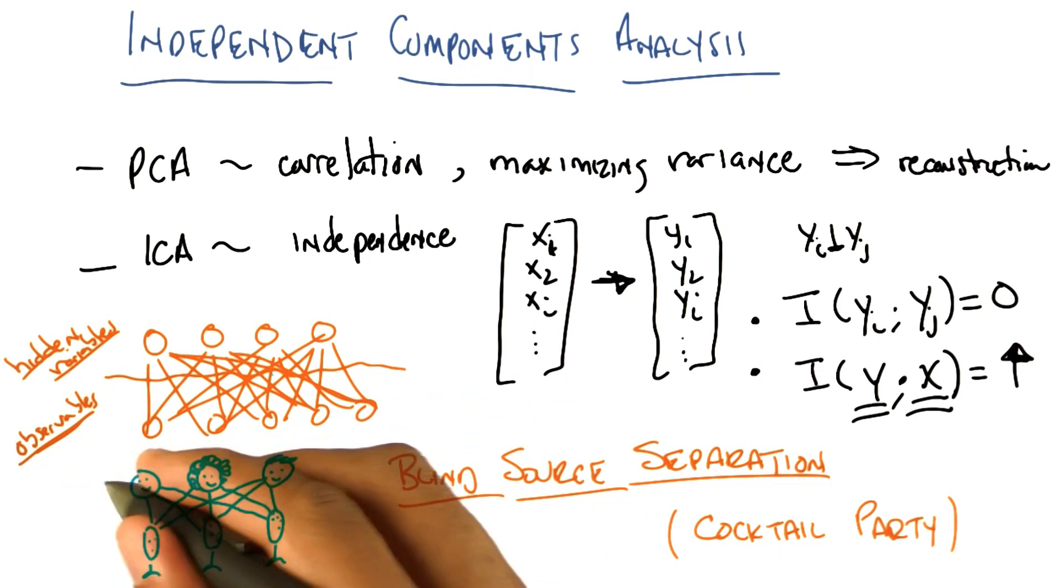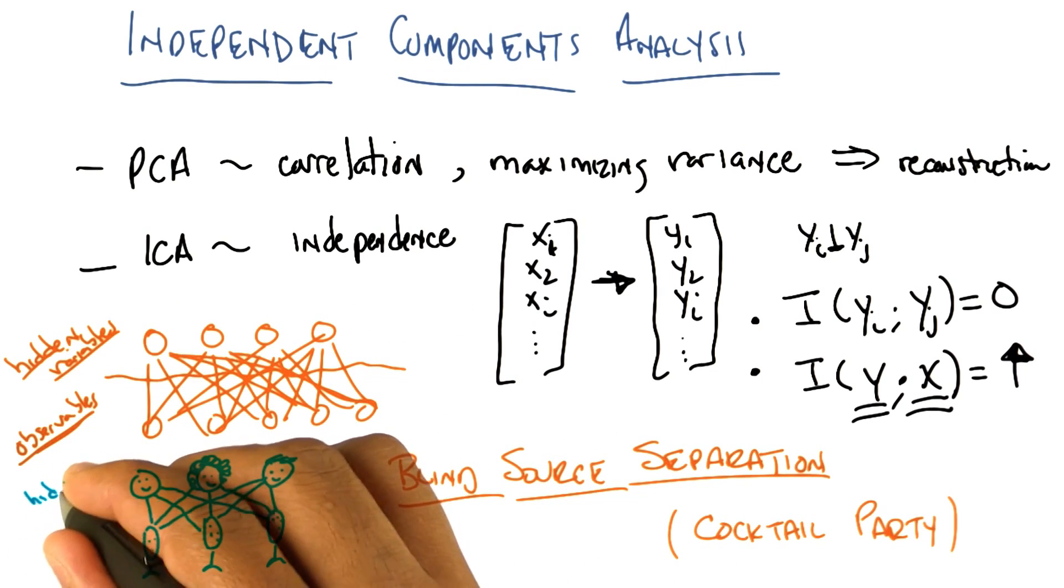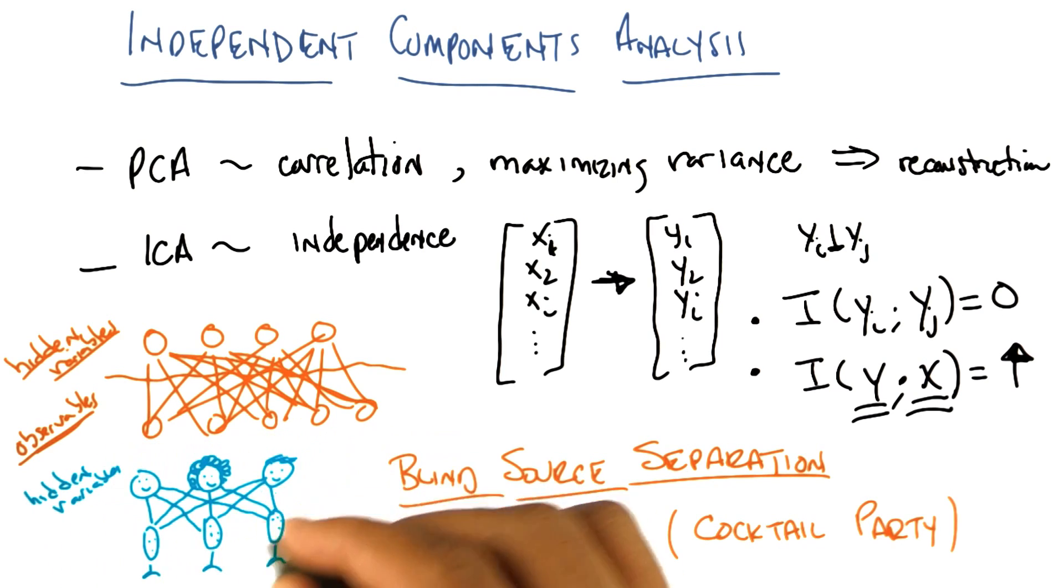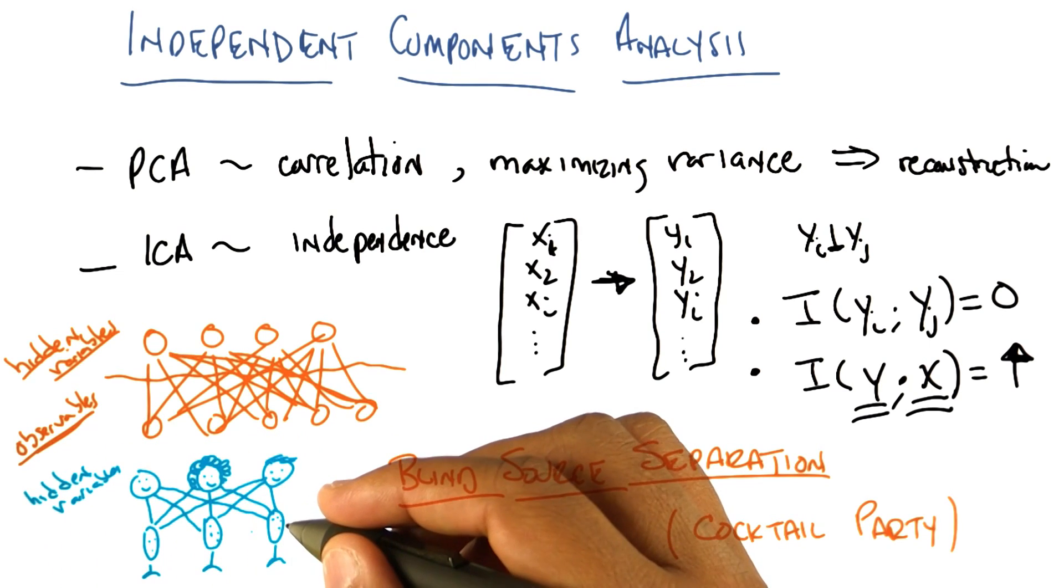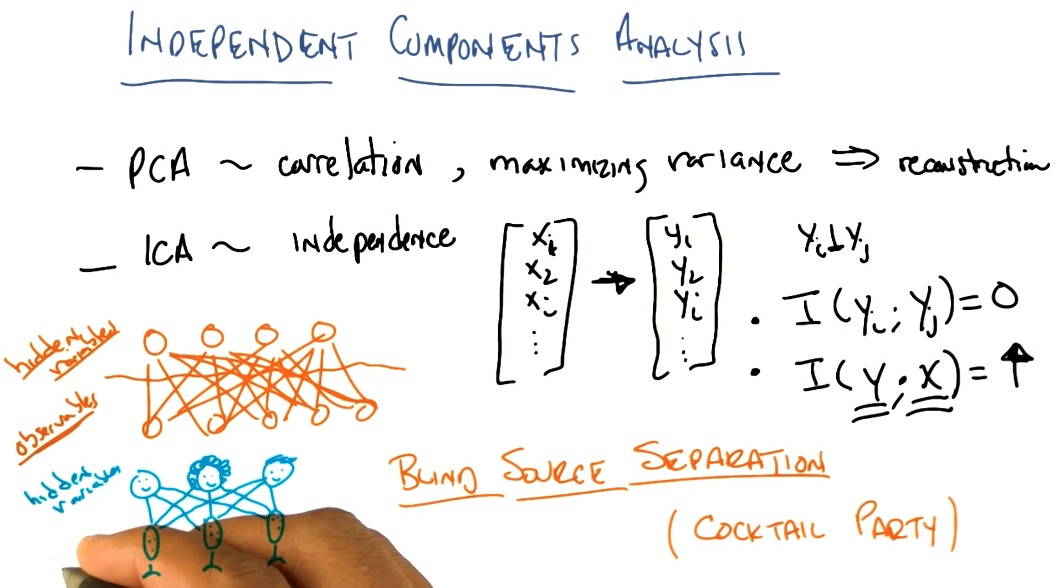In this case, if you look at our other examples, the people are the hidden variables. That is, they're the things that are causing events to happen in the world. But what we have are observables, are the microphones, and what it is that they're recording.